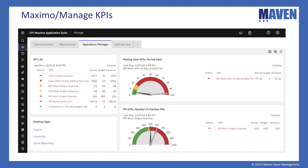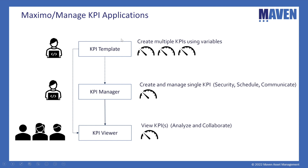Let's go back and understand how KPIs can be created, managed, and how users can focus on them. Maximo supplies three KPI applications. The first two — KPI Template and KPI Manager — are targeting an administrator, someone who knows enough SQL to create and manage the KPIs. The last application, KPI Viewer, is intended for all users of the organization. KPI Template and KPI Viewer were introduced in the Maximo 7.6 releases, while KPI Manager has been around in Maximo for many years.